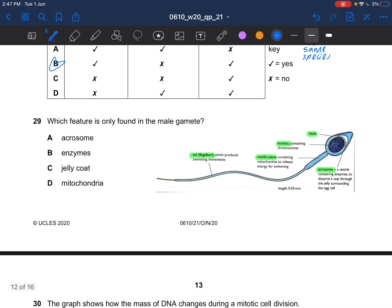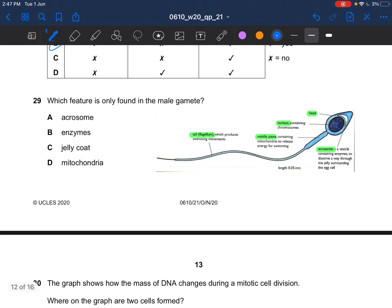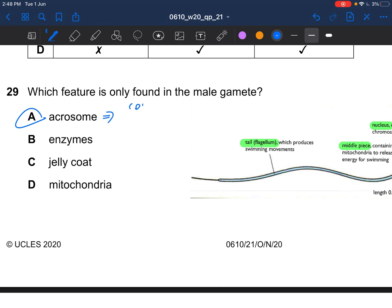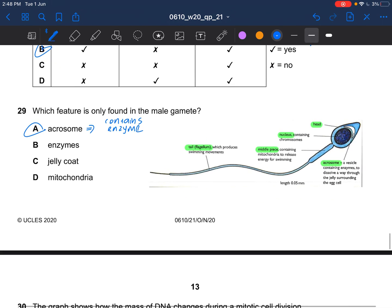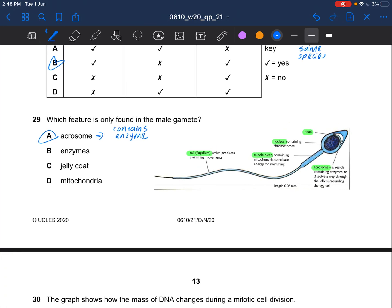Next question. Which feature is only found in the male gamete? That would be acrosome. Acrosome contains enzymes. Your egg cell has jelly coat. So yeah the answer would be A. You need to know the structure.